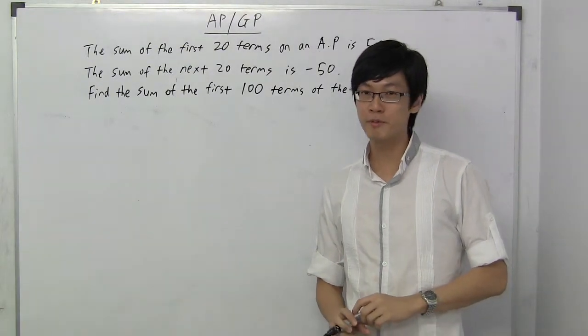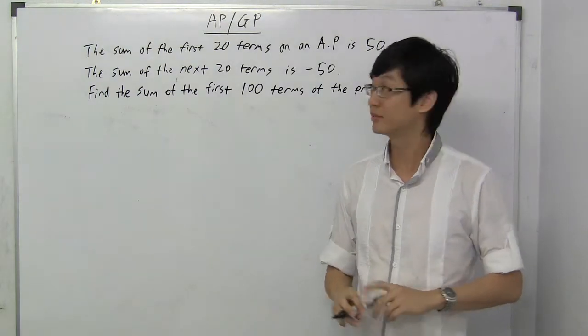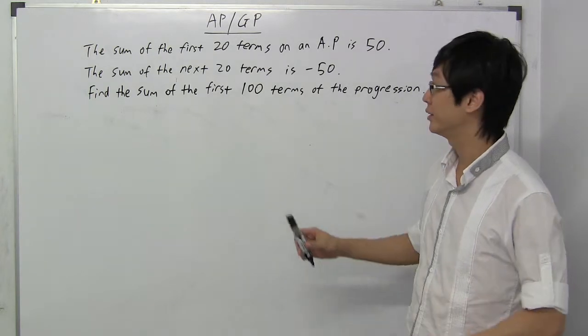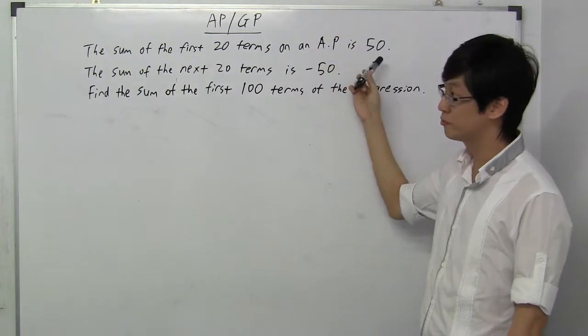Okay, after we go through the important formulas behind AP and GP, now let's try one example. This is an example of how we apply to AP. So the question says the sum of the first 20 terms of AP is 50.